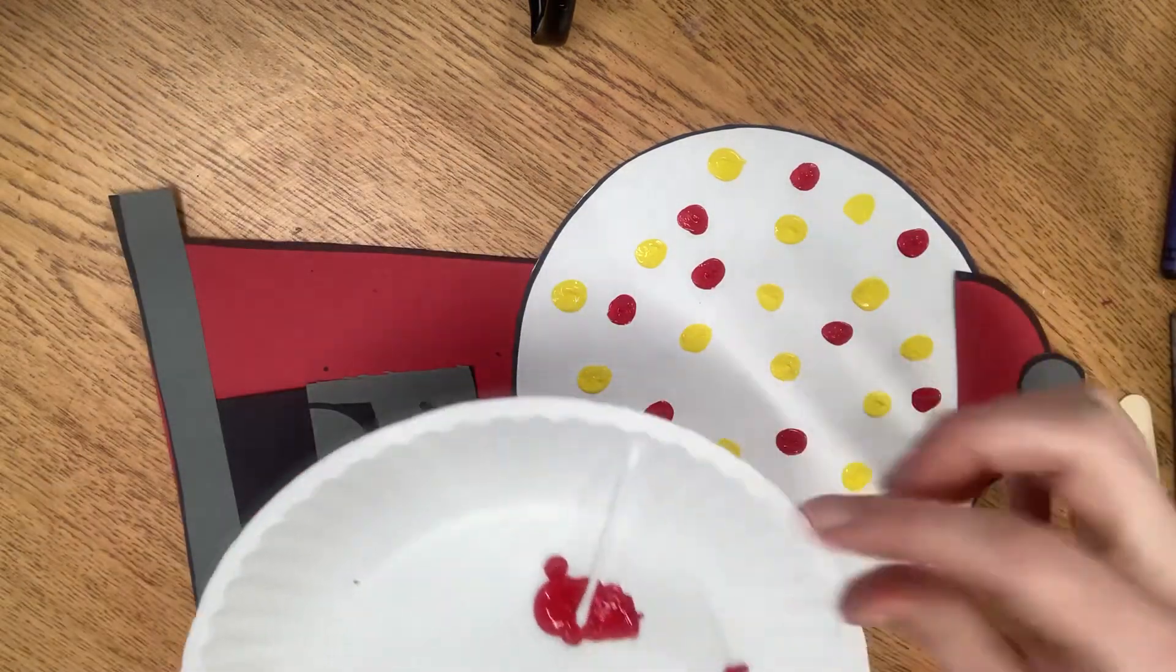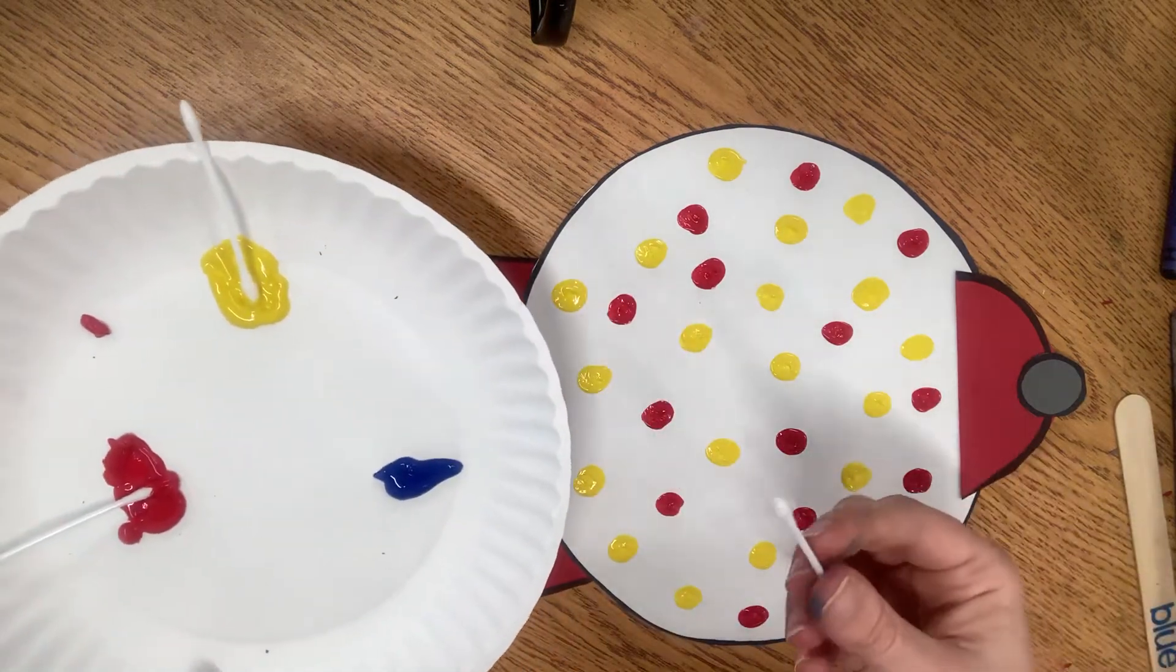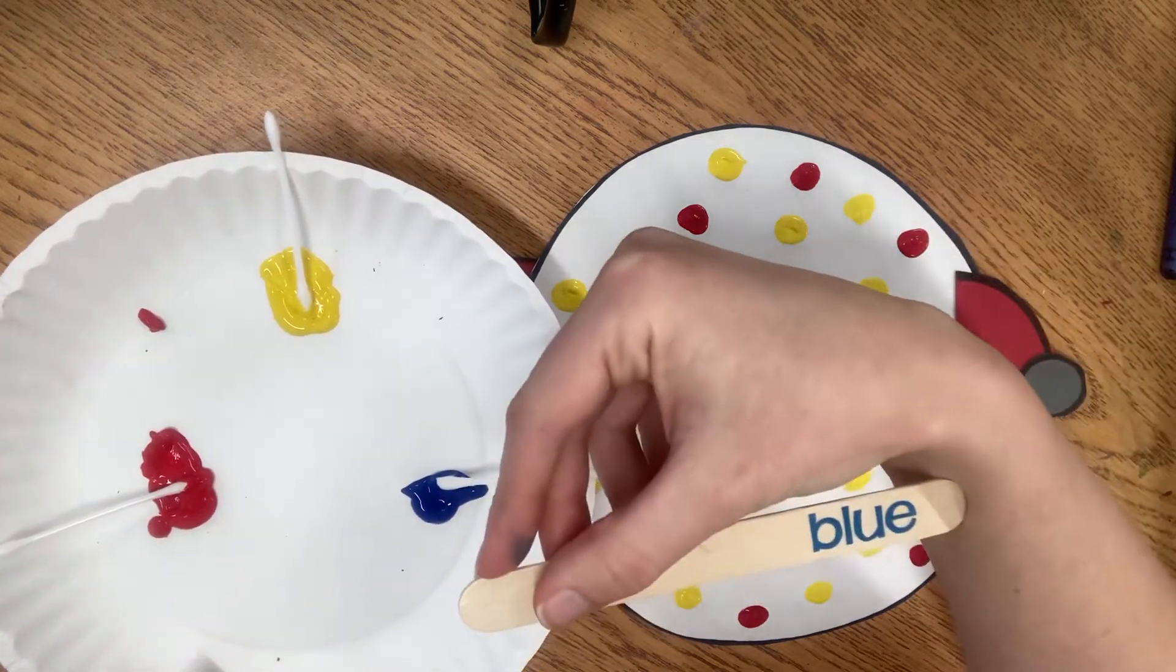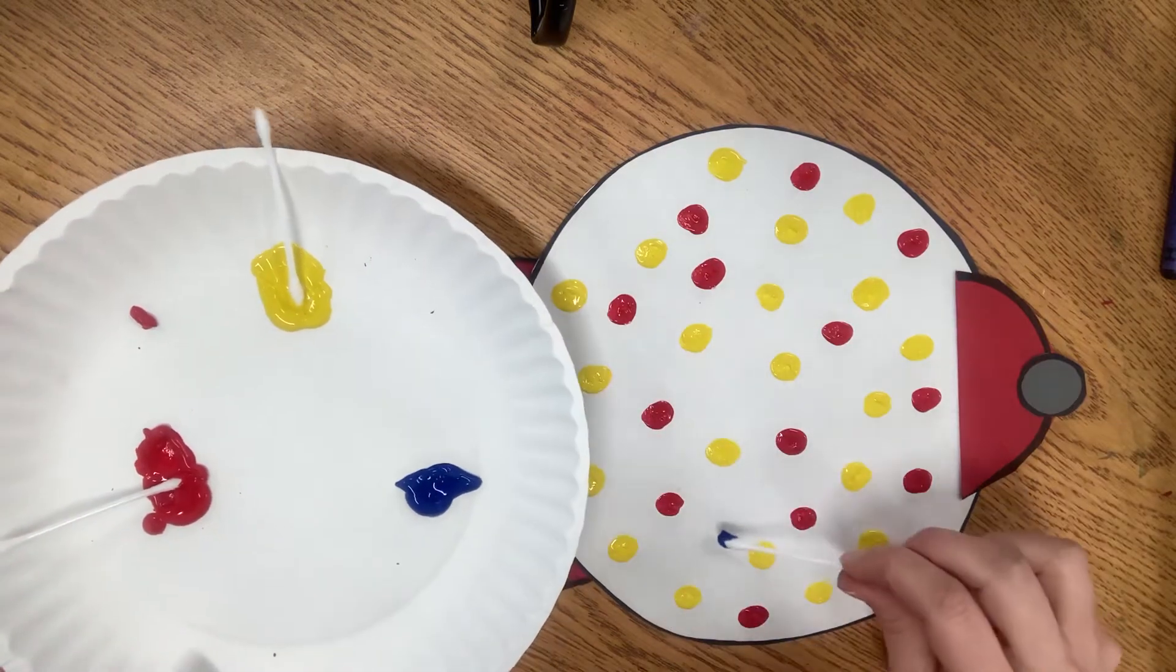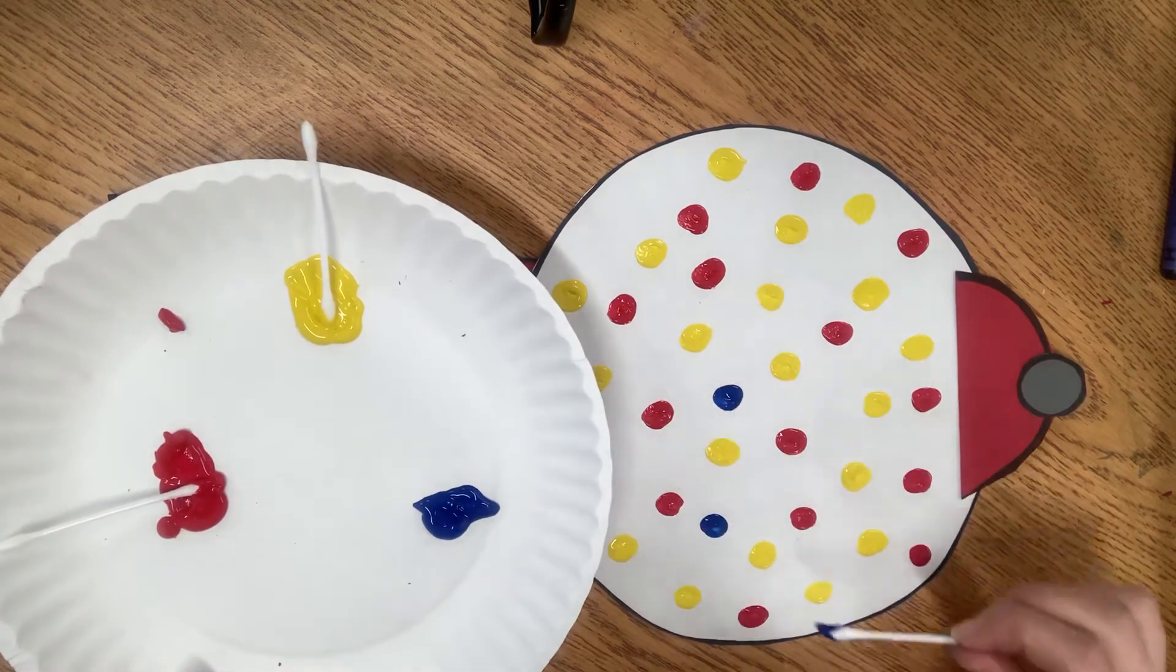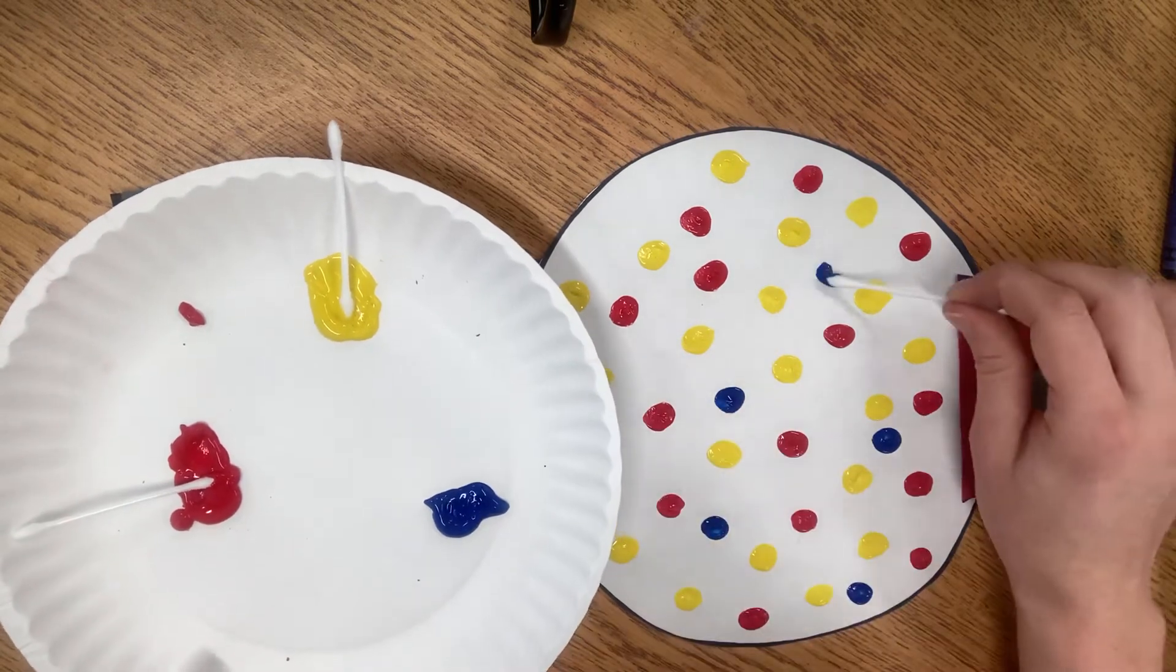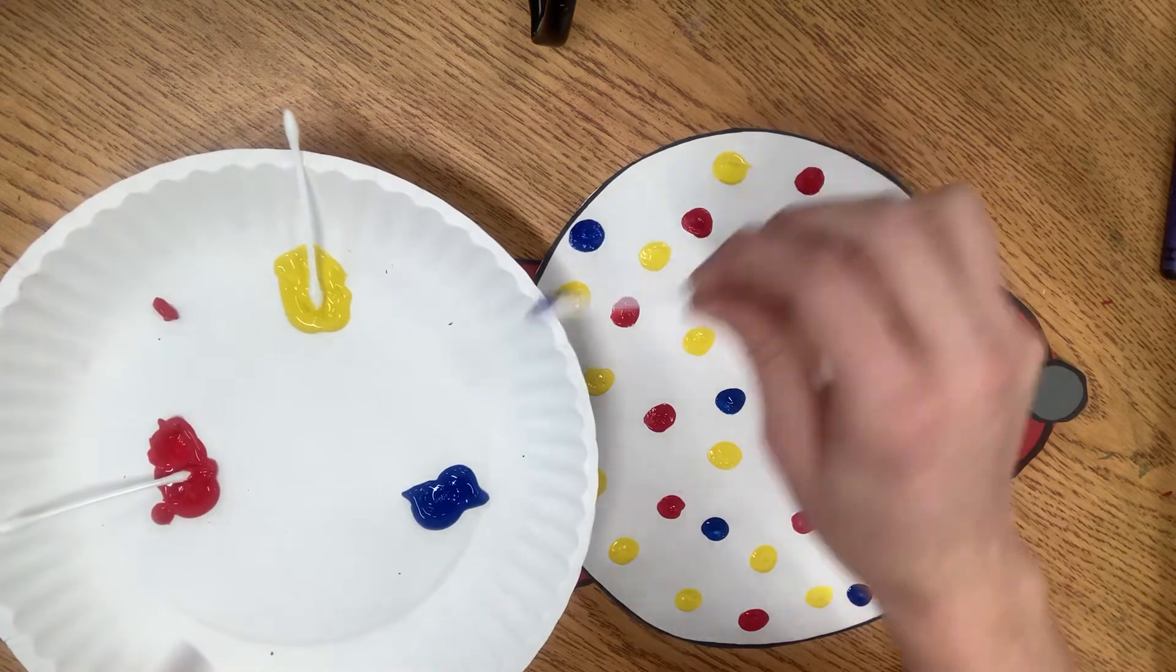And now I'm ready for my last primary color today. So I have a fresh Q-tip. I'm going to dip it in my blue. B-L-U-E, blue. And we're going to add blue paint to the rest of my gumball machine. It's really nice to still have some white showing through your gumballs. I haven't mixed any of my colors. We won't be doing that today. You're going to just go ahead and add in blue.